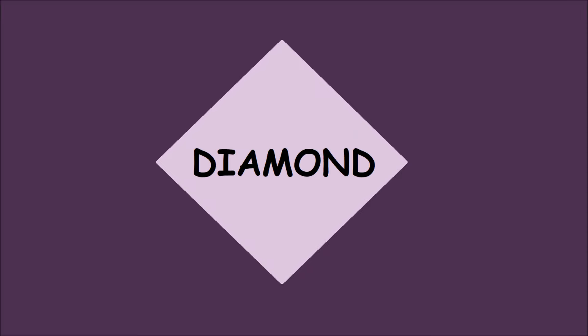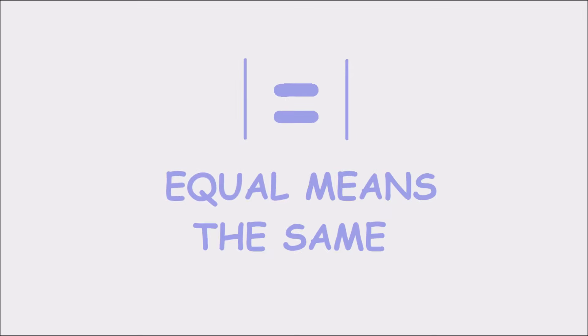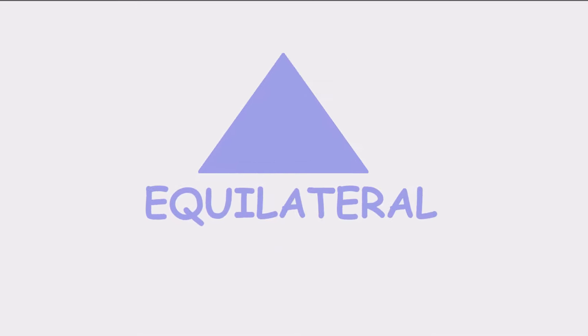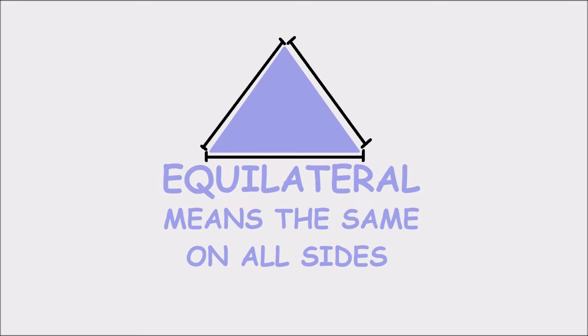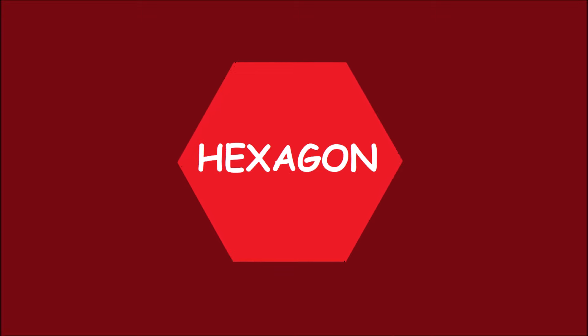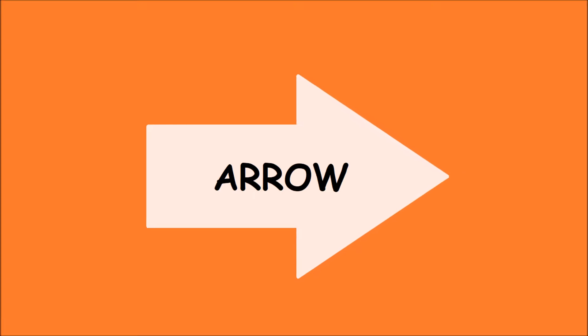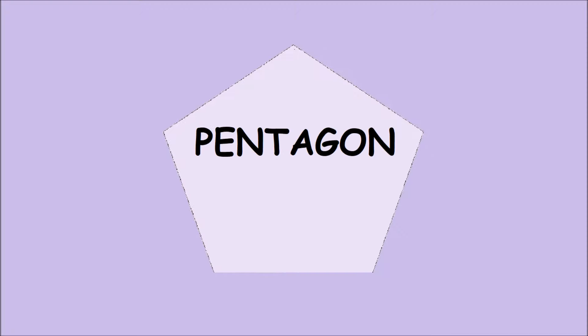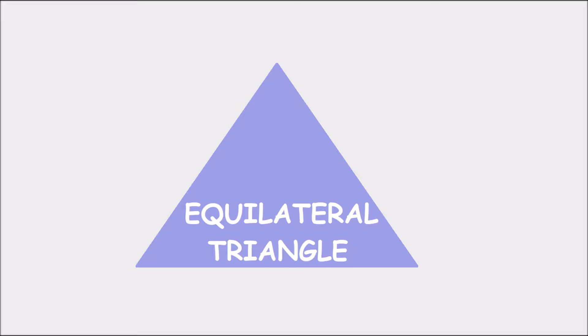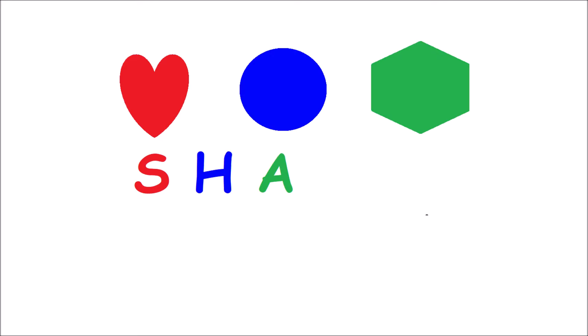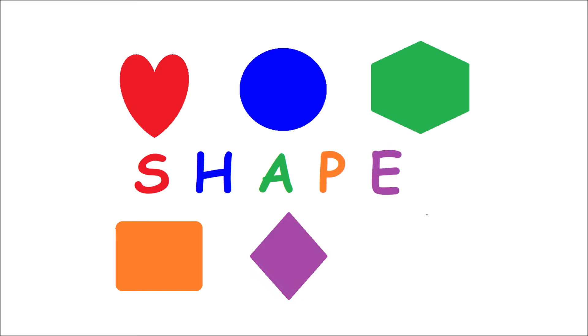Hexagon — shakes! Pentagon — shakes! Arrow is for... Equilateral triangle. S, H, A, P, E spells shape!